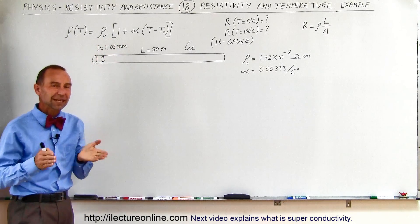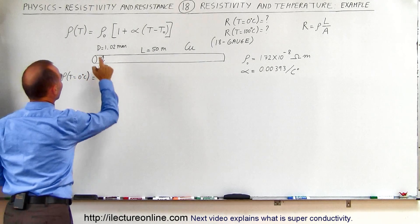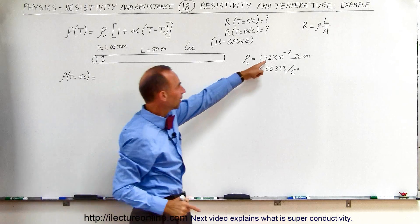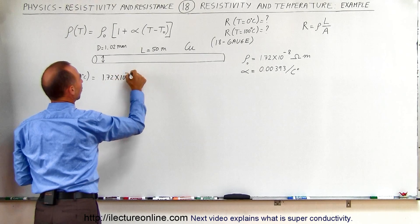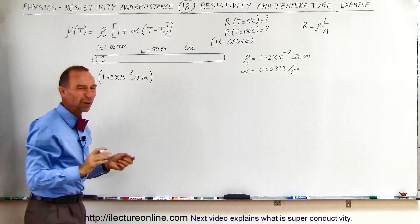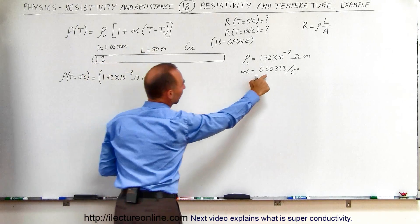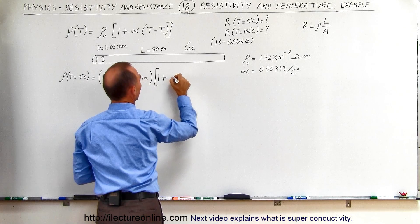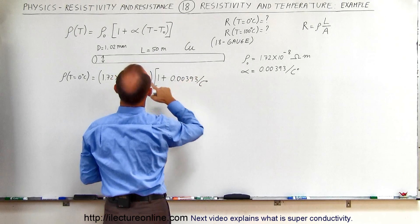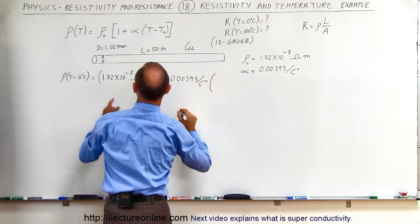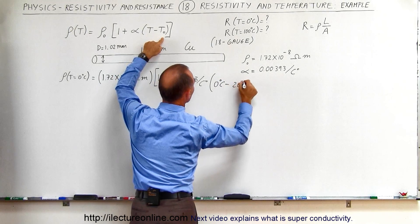First we're going to find the resistivity at the two temperatures. The resistivity when the temperature equals 0 degrees centigrade is equal to the resistivity at 20 degrees centigrade — which is 1.72 times 10 to the minus 8 ohm-meters — times 1 plus the temperature coefficient, which is 0.00393 per centigrade degree, times the difference: 0 degrees minus 20 degrees centigrade.